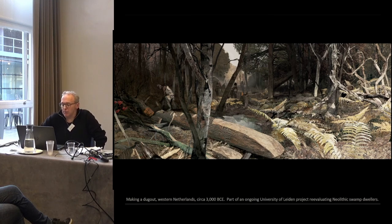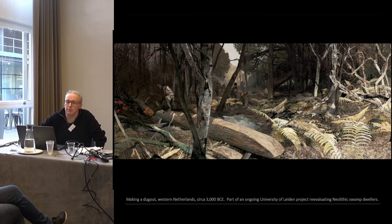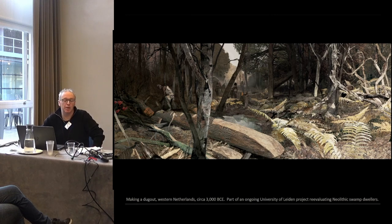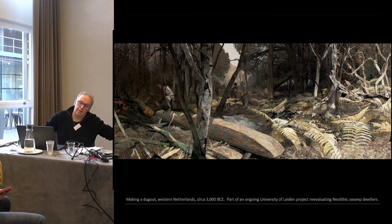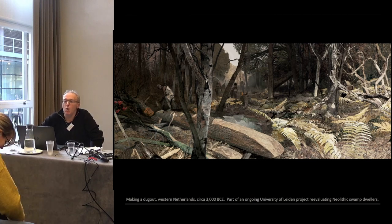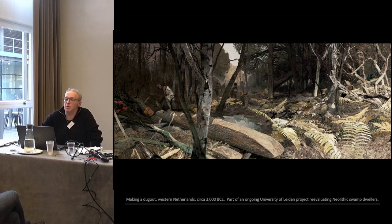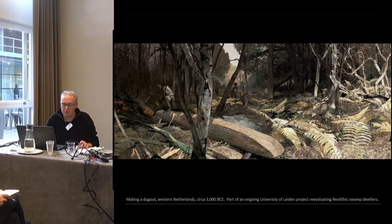What we talked about was the canoes — the dugouts that they had there — they couldn't have come from local trees, because there were simply no local trees long and straight enough. So the paleo-botanists theorised, after I'd asked the questions, where did these people get the trees from? They concluded that the people must have gone on expedition to make a canoe and then canoe it back. This is one of our series; I'm actually working on this project for several years.